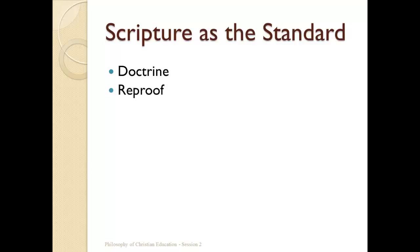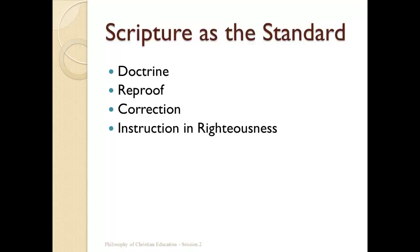Second, Paul says Scripture is profitable for reproof — this is how the Word of God tells us we have done wrong. It points out our sin to us. This has always been seen as one of the uses of the law of God. Third, Scripture is profitable for correction — now that it has shown us our sin, it tells us how we can get back on the right path. And fourth, Scripture is profitable for instruction in righteousness — it tells us how we can continue living a life faithful to God.